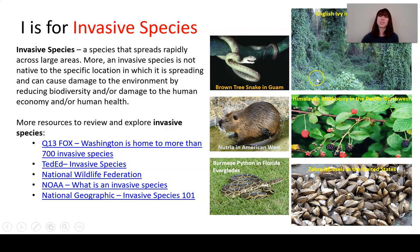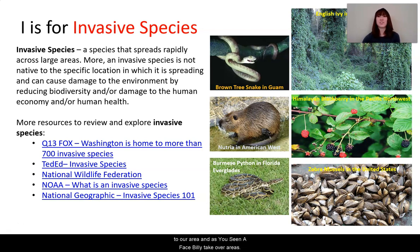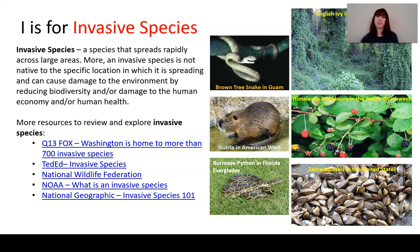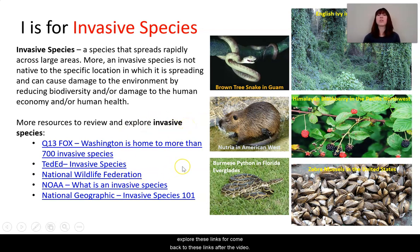Here are some examples. One you've probably seen in the Seattle area is English ivy — it grows up trees and covers hillsides, choking out everything else. Another is Himalayan blackberry: while blackberries are delicious, these are not native to our area and they really take over. Some others that have been important are zebra mussels, which have been impactful in the Great Lakes; the Burmese python in the Everglades, which can outcompete other organisms; nutria in the American west; and brown tree snakes in Guam. Please either pause the video to explore these links or come back to them after.